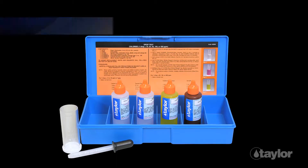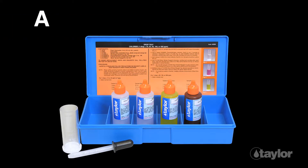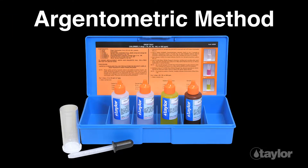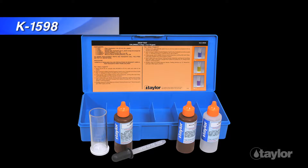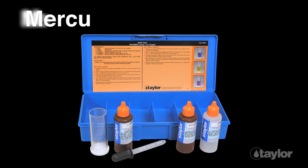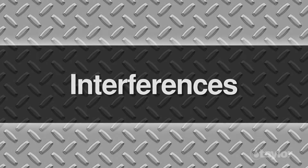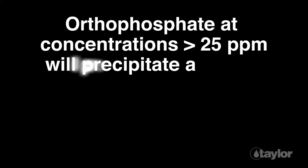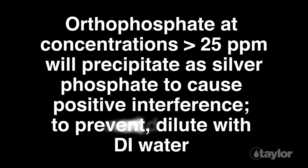Taylor's K1549, which we are demonstrating in this video, is a simple drop test that employs the argentimetric method to quickly and accurately determine chloride levels. The mercuric nitrate method featuring our K1598 is demonstrated in a separate video on our website. Orthophosphate at concentrations greater than 25 ppm will precipitate as silver phosphate to cause positive interference.